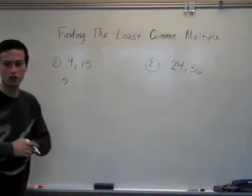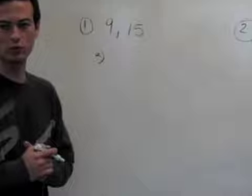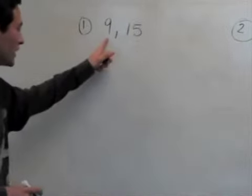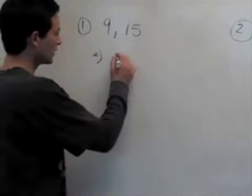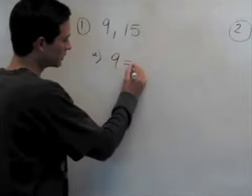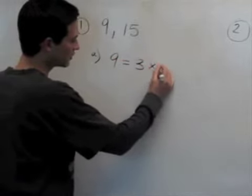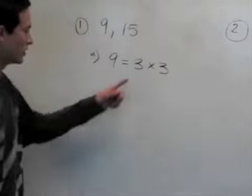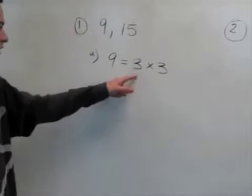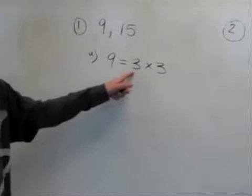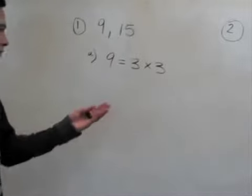Prime factors are numbers that are divisible by 1 and themselves. So for 9, we would write 9 equals 3 times 3. Notice that 3 is only divisible by 1 and itself. No other number can divide 3 and get an even number.